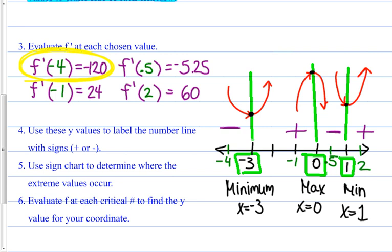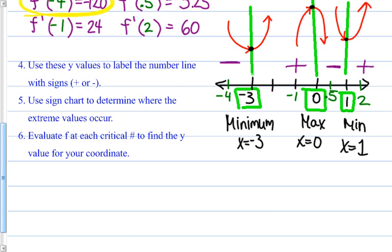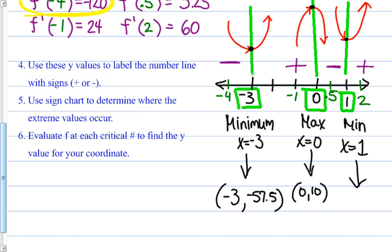Step 6: evaluate f at each critical number to find the y value for each coordinate. Plug x = -3 into the original function: y = -57.5, giving the minimum at (-3, -57.5). Plug in x = 0: y = 10, giving the maximum at (0, 10). Plug in x = 1: y = 6.5, giving the minimum at (1, 6.5).